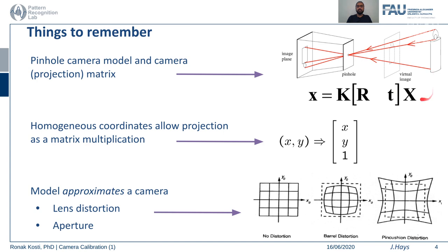The relationship between image and world coordinates is represented by an equation where small x is the coordinate in the image plane and capital X is the coordinate in the real world. R and T represent rotation and translation of the object in the real world — these are extrinsic parameters — whereas K relates to the focal length, shear, and camera centers, considered intrinsic parameters. The matrix generated is the projection matrix, and our main task is to estimate it.